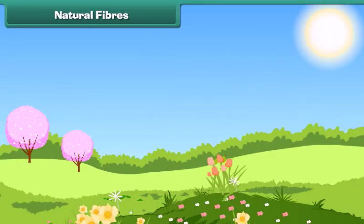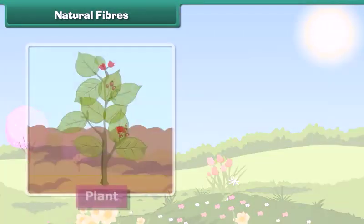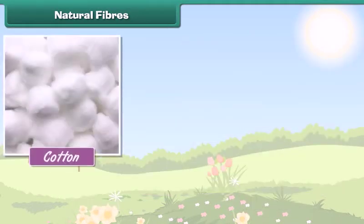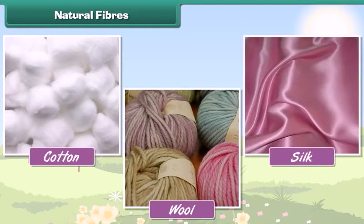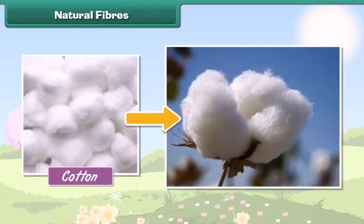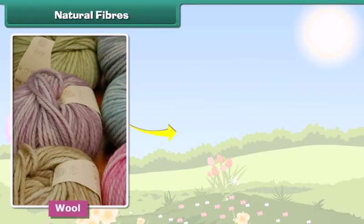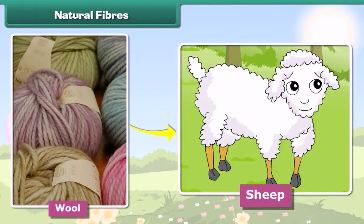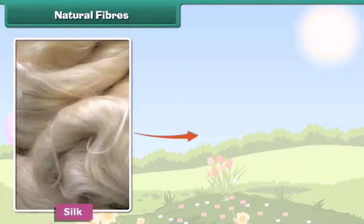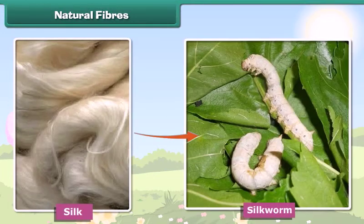Natural fibers are made from plants and animals. Cotton is obtained from plants. Wool is obtained from sheep, goats and camels. Silk is obtained from silkworms.